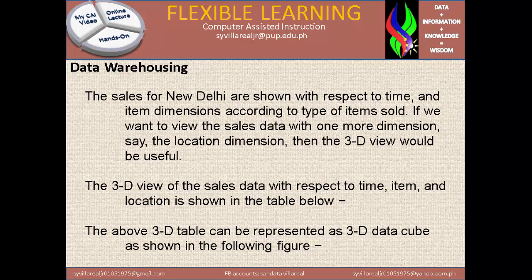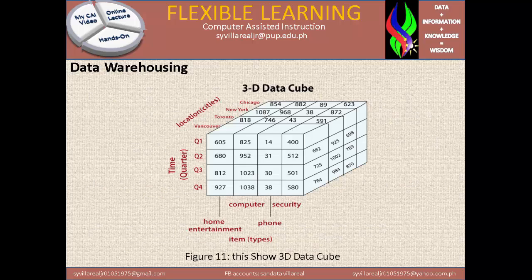The 3D view of the sales data with respect to time, item, and location is shown in the table below. The above 3D table can be represented as a 3D data cube as shown in the following figure. Figure 11 shows the 3D data cube. If you notice, we have here the time as a quarter: Q1, Q2, Q3, Q4.